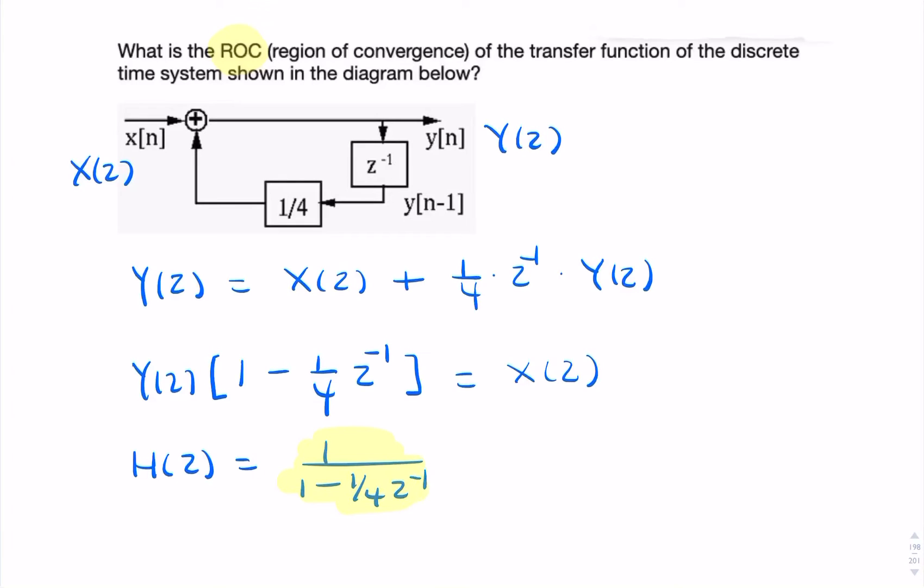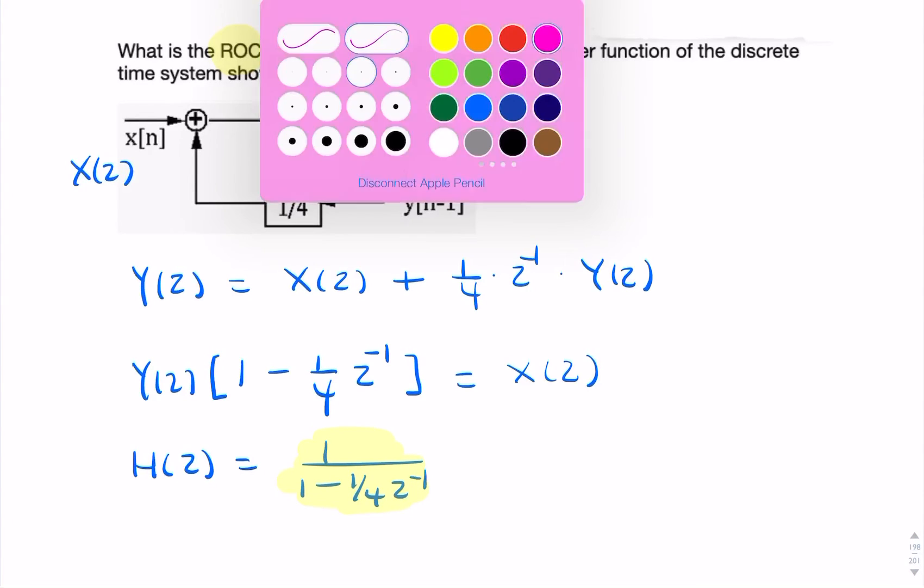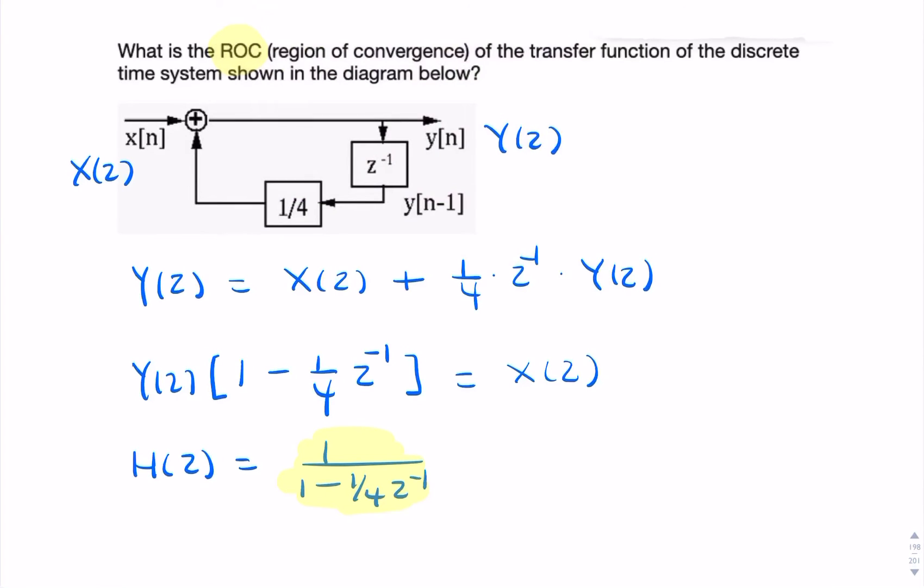I still haven't found the region of convergence. So to do that, I would look at the denominator here. So for this to be able to write that as a power series, we would need the condition that 1 over 4 z to the minus 1 is less than 1.